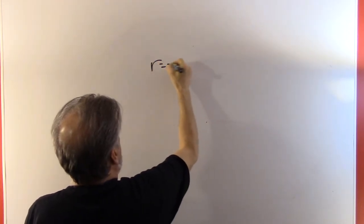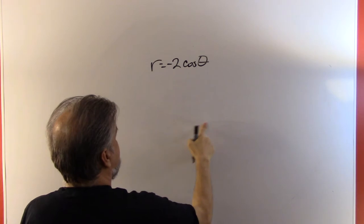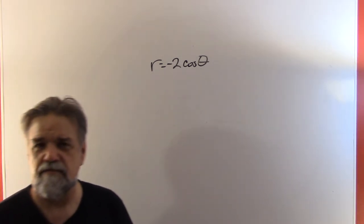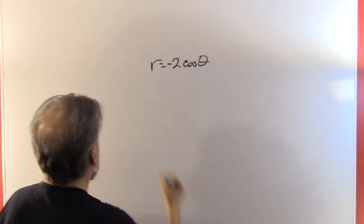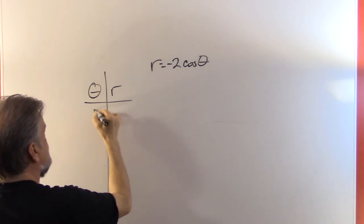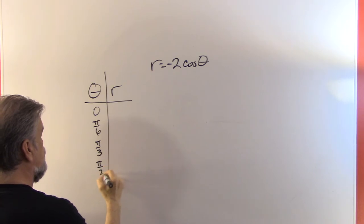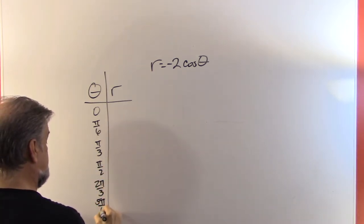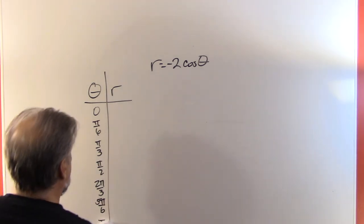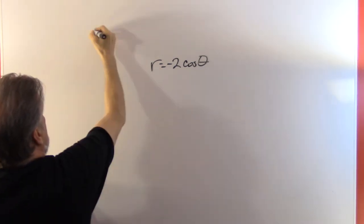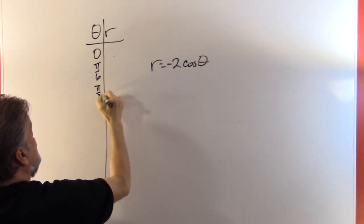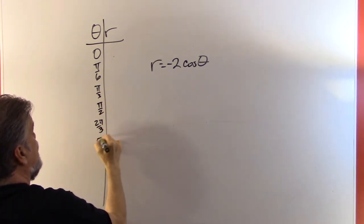Let's look at yet another one — a little less straightforward. Let's have r equals negative two times the cosine of theta. This time I have both theta and r, so I'm going to make a little table, the same thing I used to do when first getting used to graphing with x and y. So theta and r. The theta values are: zero, pi over six, pi over three, pi over two, two pi over three, five pi over six, and pi.